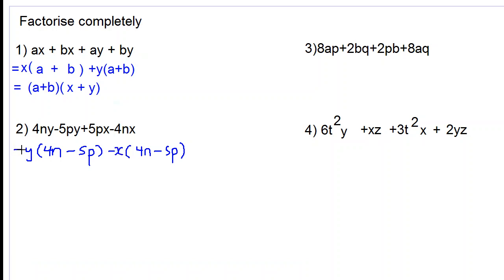So now that we have the same brackets, 4n minus 5p and 4n minus 5p, we can take that out. And if we factor out this from the first term in brackets, we will have y, and we factor it out from the second term, we have minus x. This is the answer for number 2.